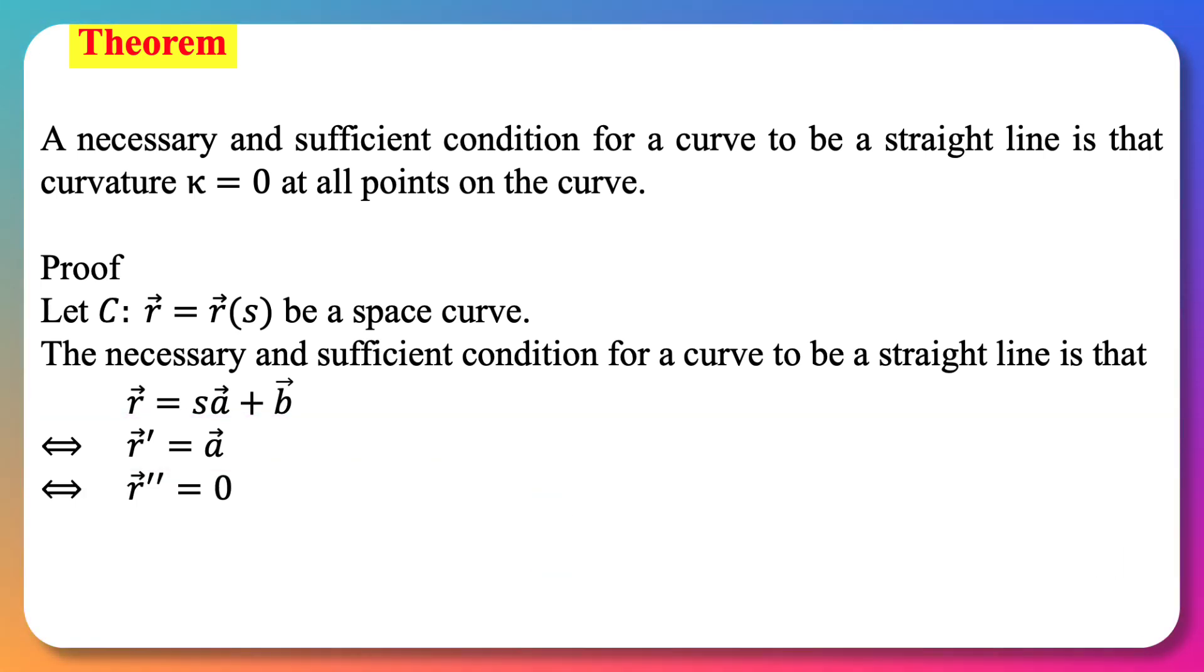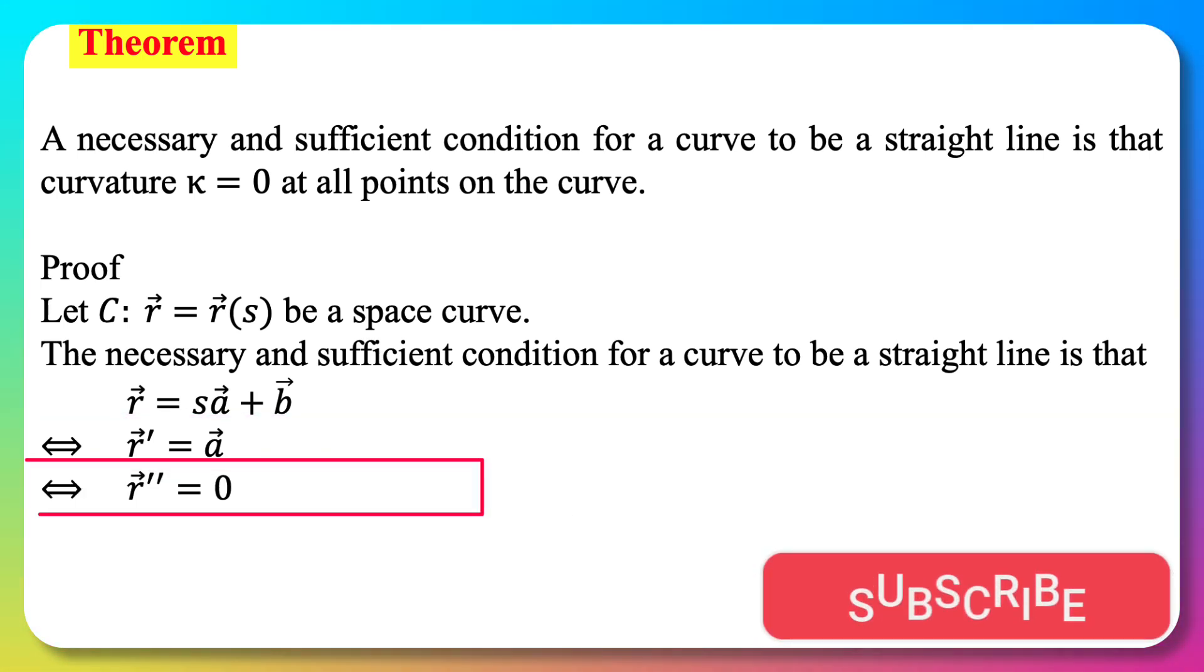Again differentiating, we get r double prime equals zero because a is a constant vector, and so its derivative is zero.